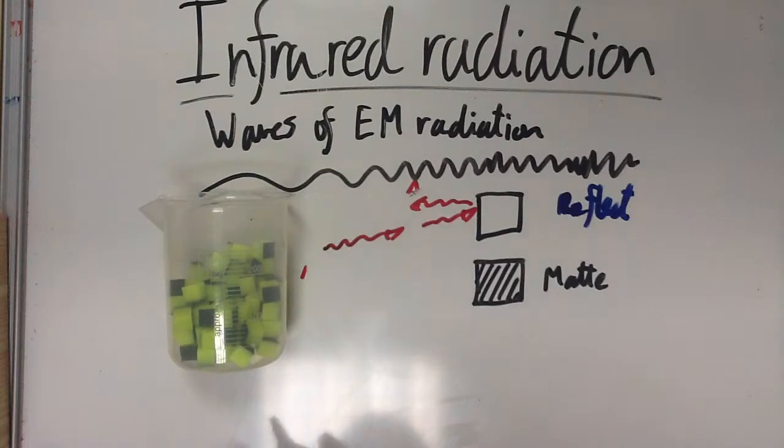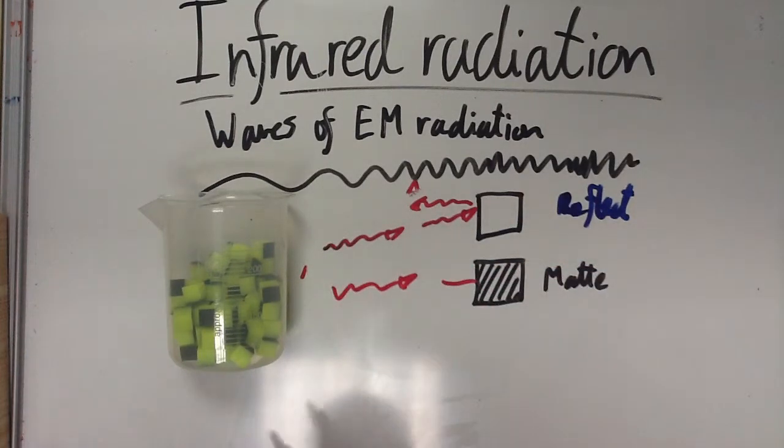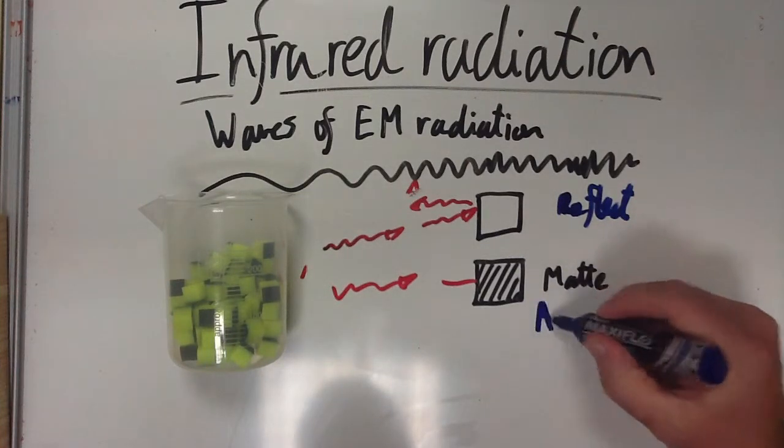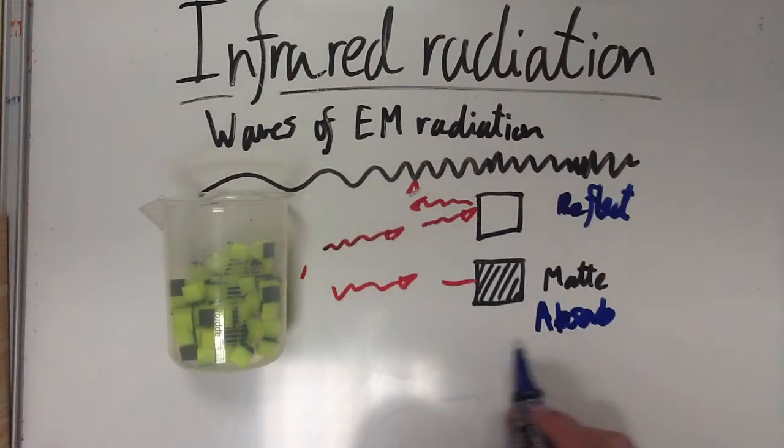The dark one here, when the infrared radiation strikes it, it will absorb more infrared radiation. It will absorb it quite well. So if you go into clothes shops in the winter, you get lots of dark colors because they're very good at absorbing infrared radiation.